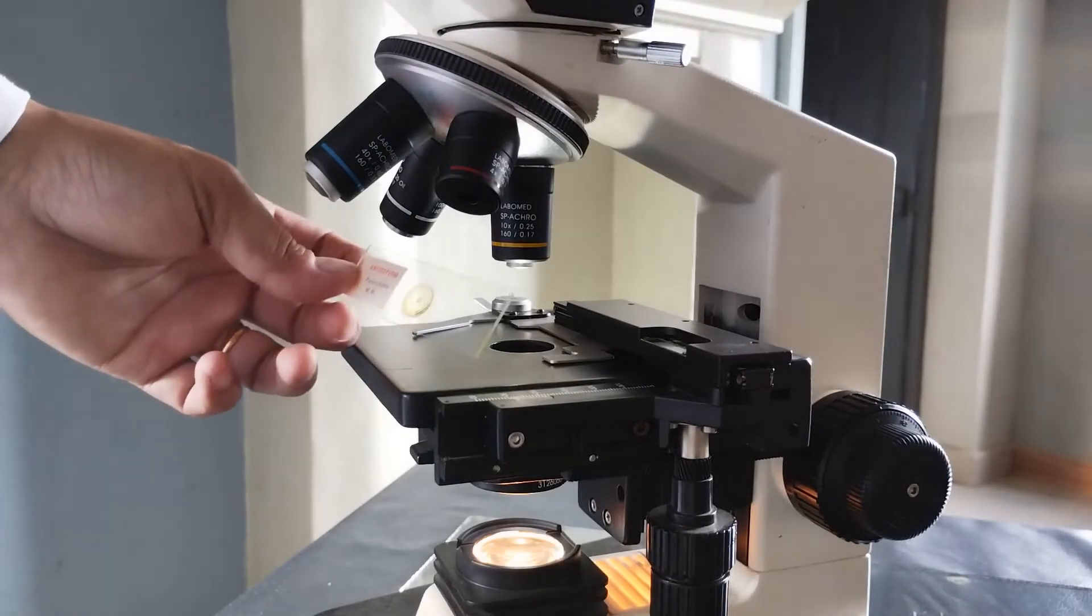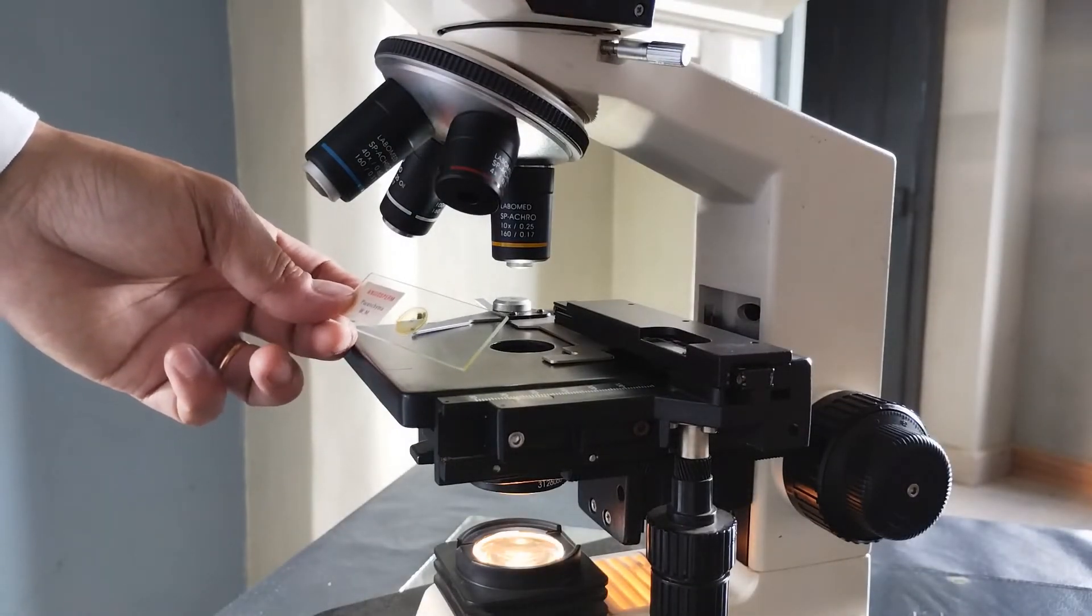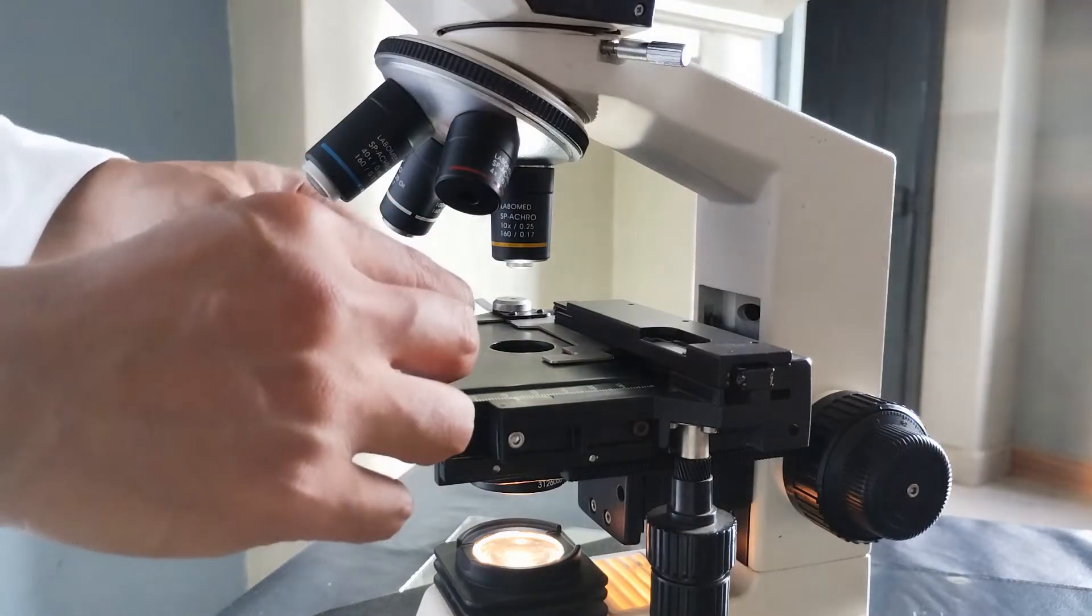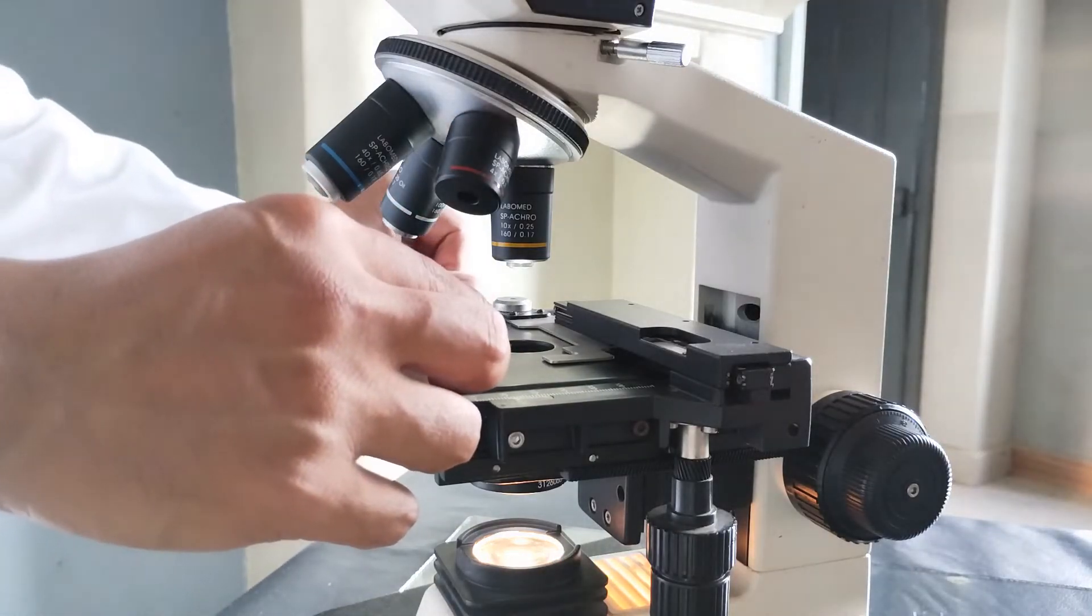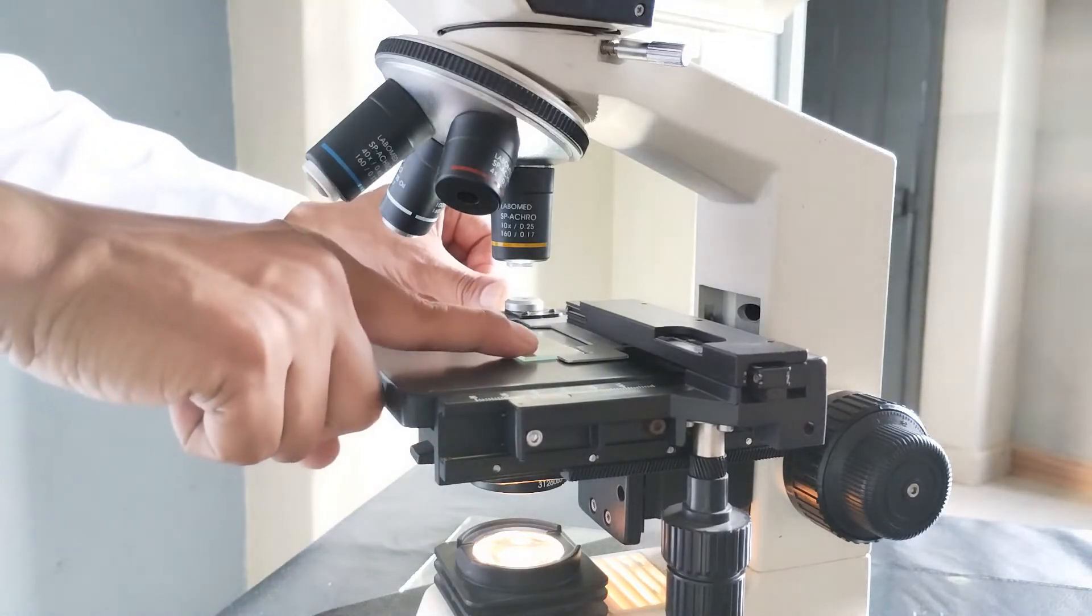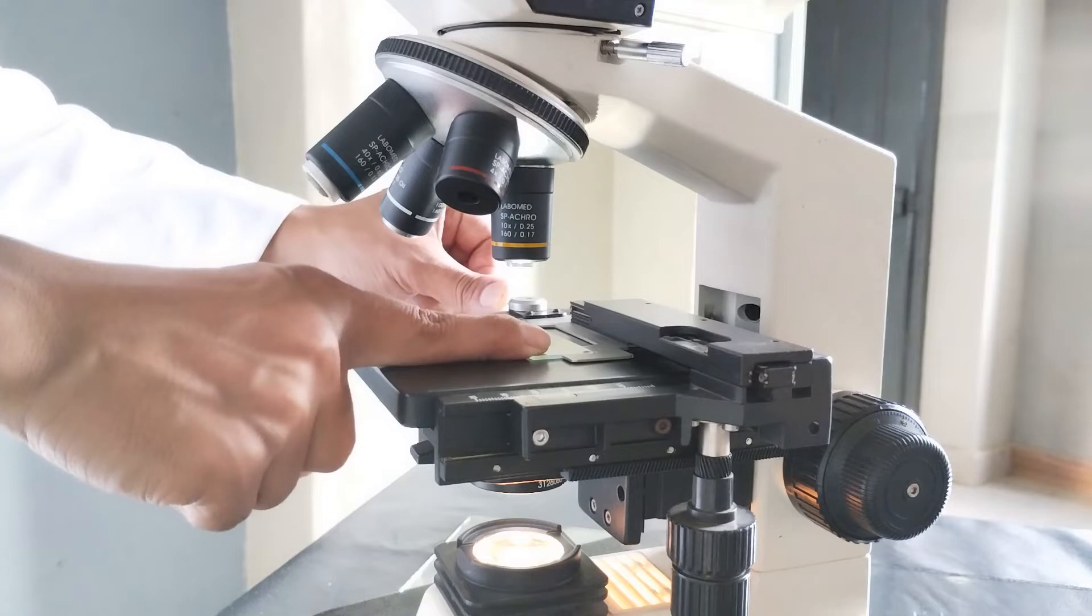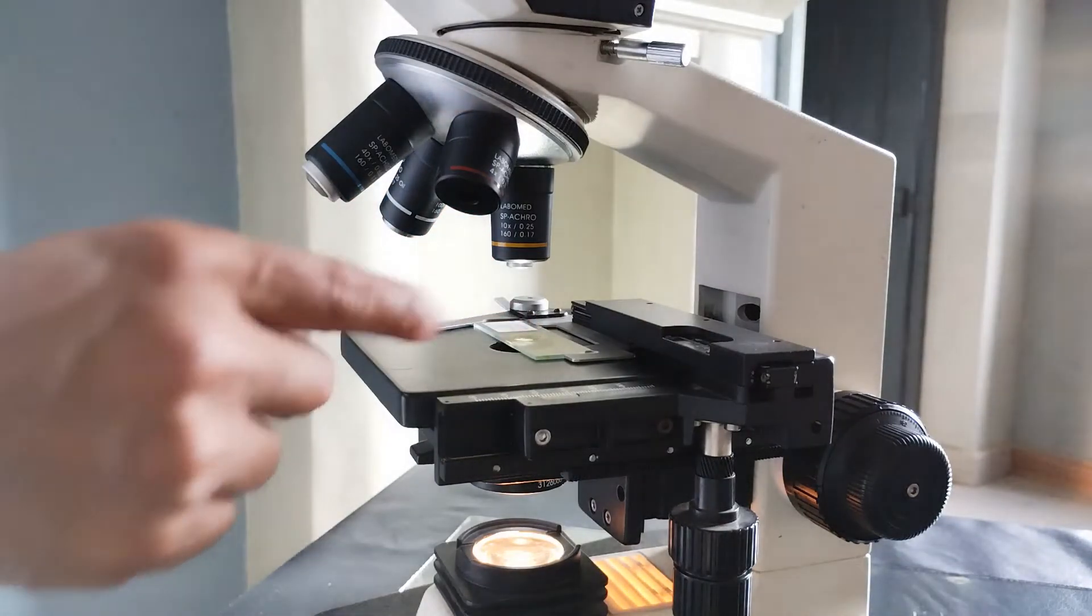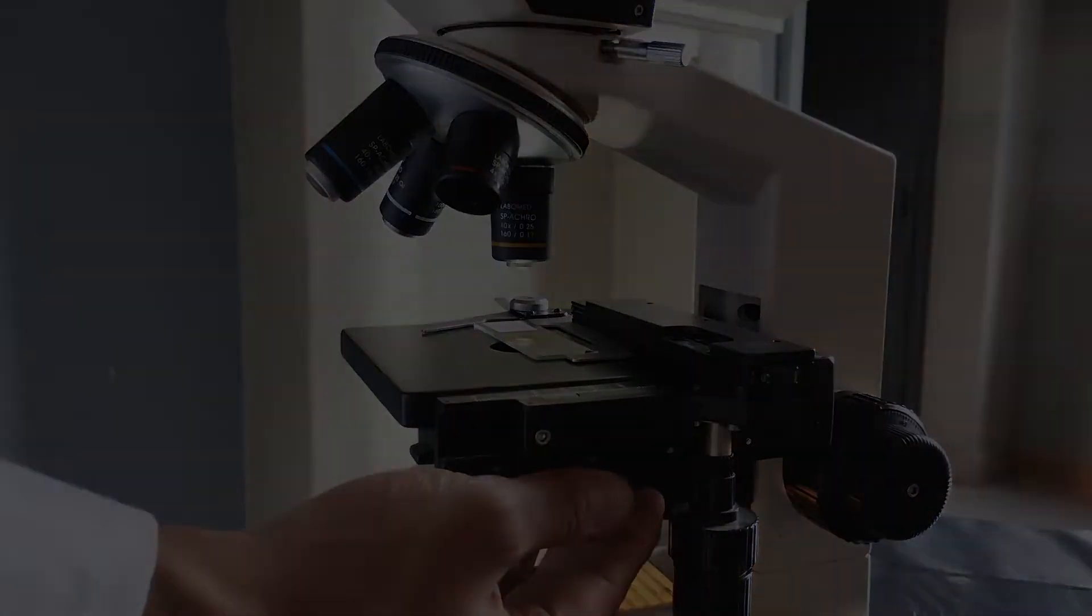Now place the prepared slide containing the specimen of interest onto the stage. Binocular microscopes are mostly designed with a mechanical stage setup. In order to secure the slide in position, pull the spring-loaded slide clip away from the center, and then place the slide securely in the slide compartment. Bring the slide clip back in position, which now firmly holds the slide.